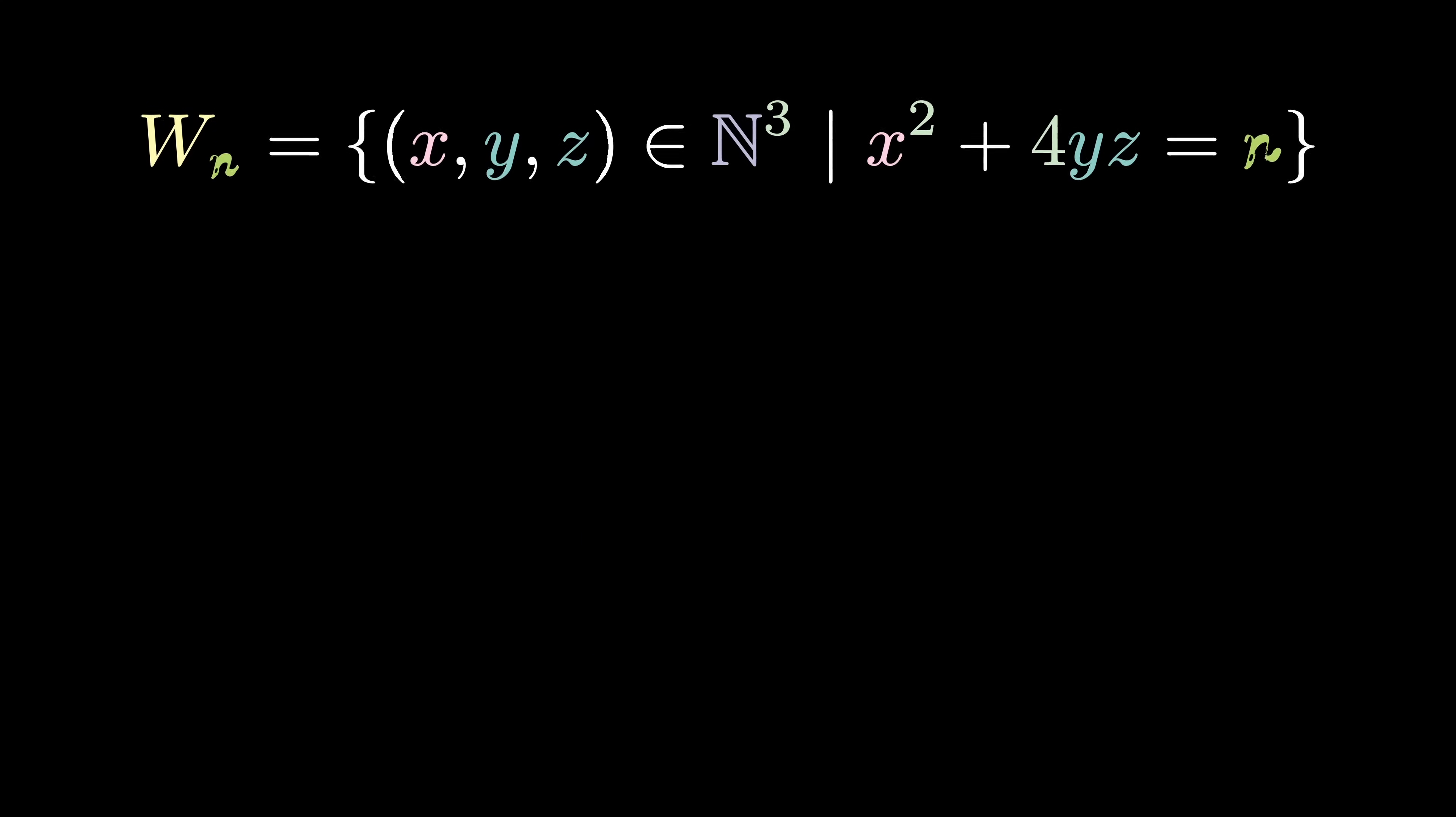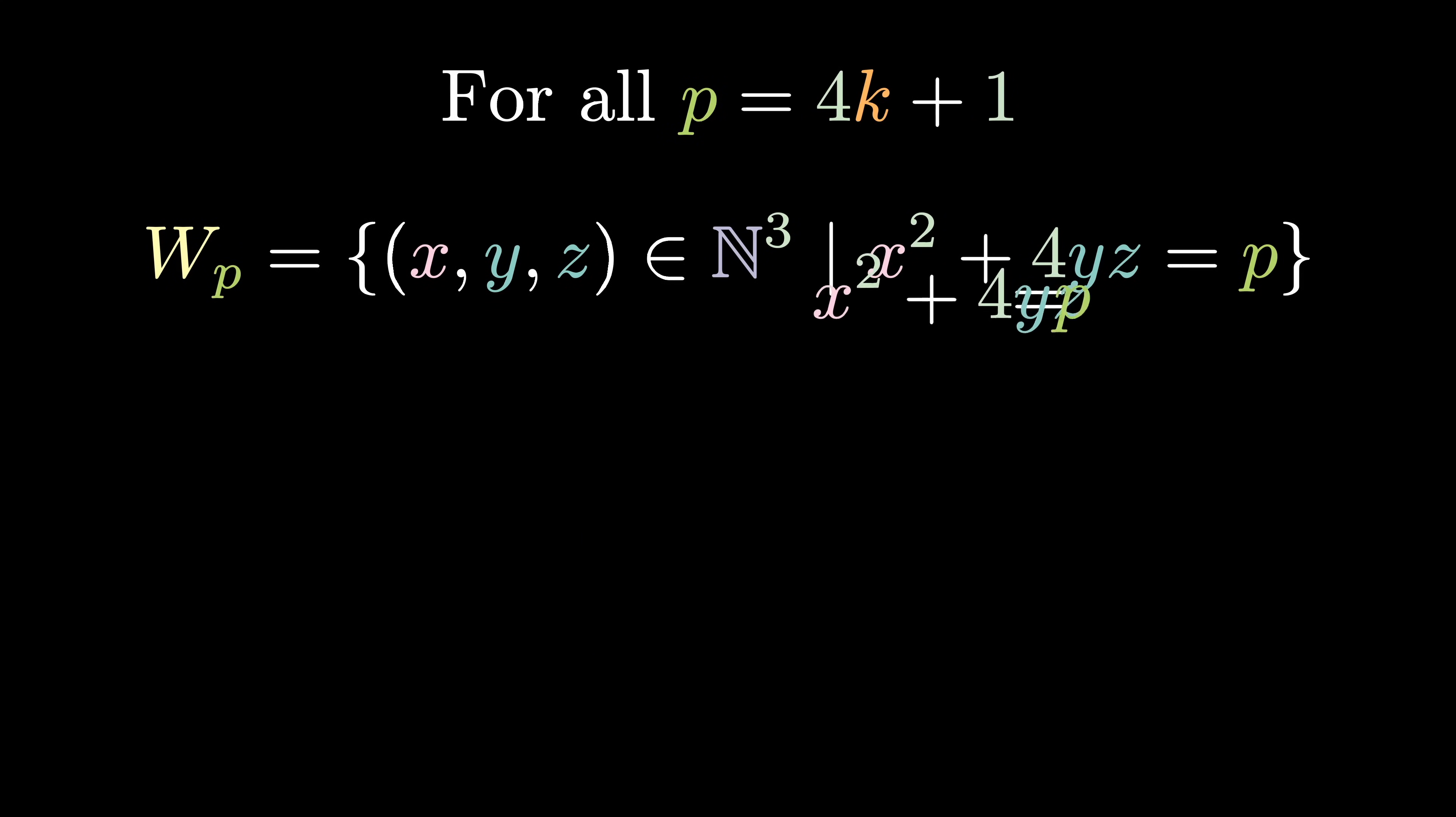If I set n to be some prime p of the form 4k+1, you can see that if y equals z, this forms a solution to p = a² + b² since now p = x² + 4y² which equals x² + (2y)². So now our new goal is transformed from expressing p as a² + b² to: does there exist a windmill for p with y = z?